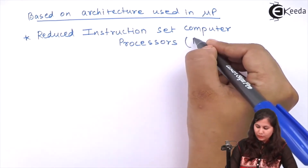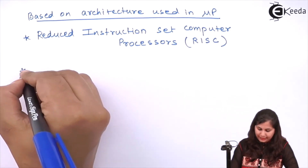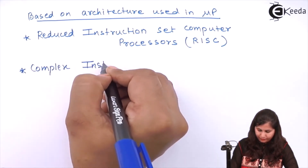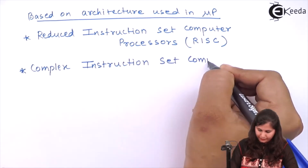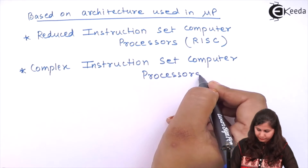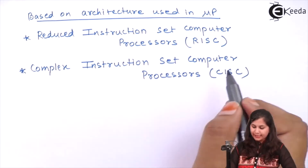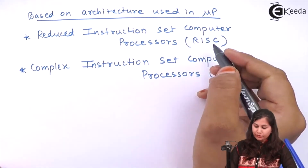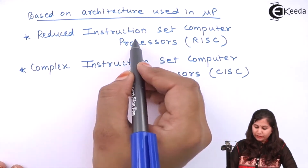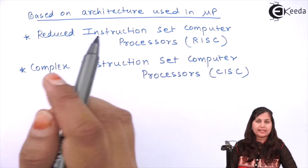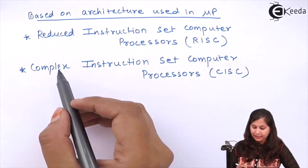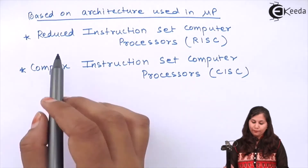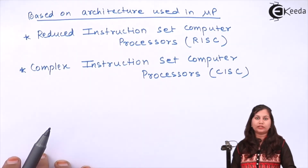The first type is the Reduced Instruction Set Computer processor, also called RISC. The second type is the Complex Instruction Set Microprocessor, also called CISC. Based on the names, you can understand that RISC has simple instructions, while CISC has complex instructions that are more difficult for the user to understand. These are the two types of microprocessors based on architecture.